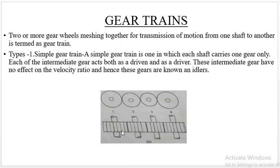We have two shafts, and in this case we have power transmission between these shafts. This type of arrangement is a type of alignment where we have a combination of gears on our shaft. This is also a gear train.